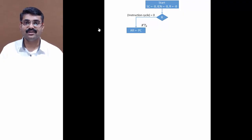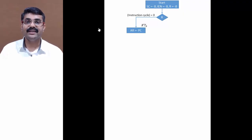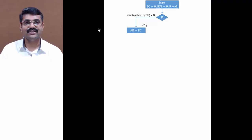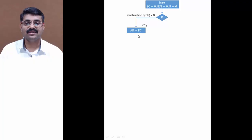At time R' T0, in the instruction cycle, the content of PC is transferred to AR — the address of the instruction to be executed is placed in the address register. Since we are combining interrupt and instruction cycle, we use R' to indicate the instruction cycle. At time R' T0, PC is transferred to AR.